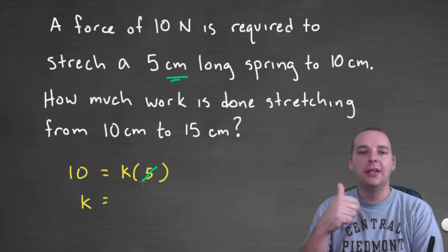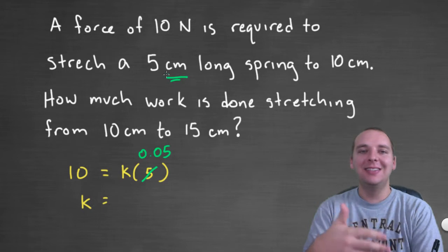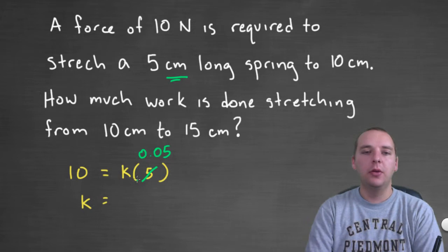So we can compute this 5 centimeters to 0.05, and we'll consider it as meters, right? This is centimeters, and we're going to call it 0.05 meters.